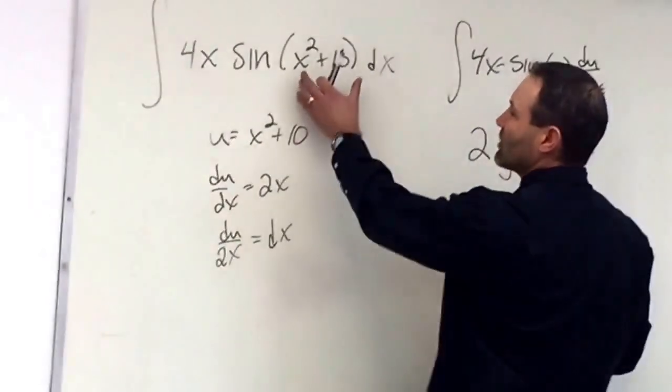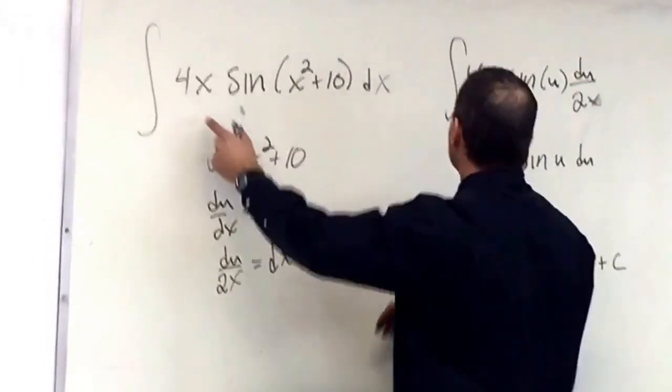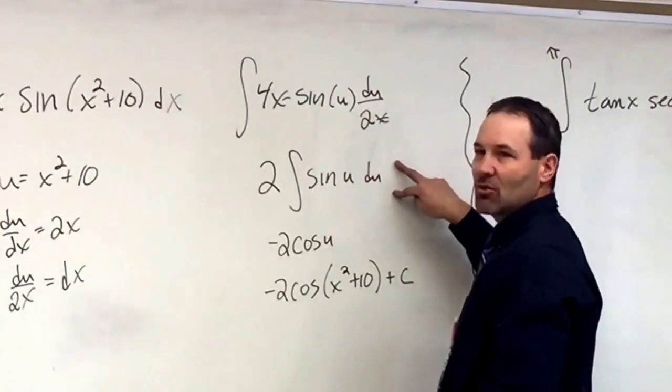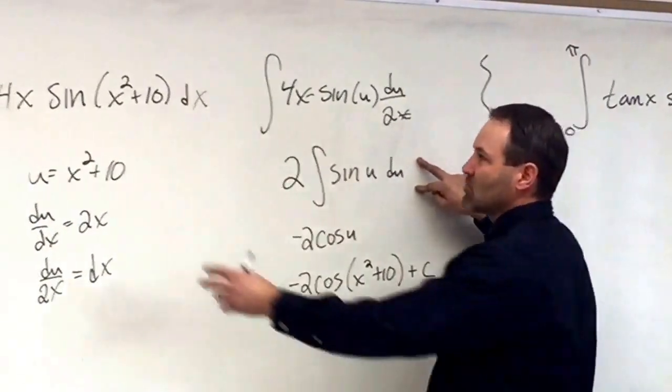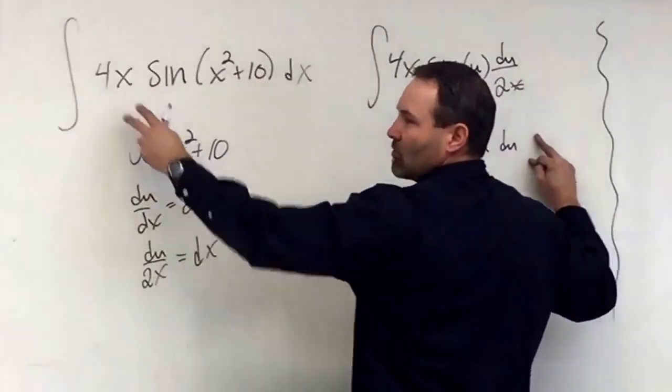We have to think of, if we're going to choose this, we have to be able to get rid of the other x stuff, because our integral can only be in terms of u. So the 4x would not get rid of this stuff, but this would get rid of the 4x.